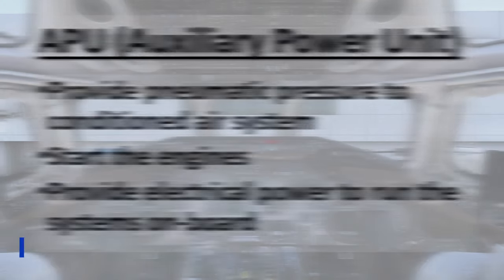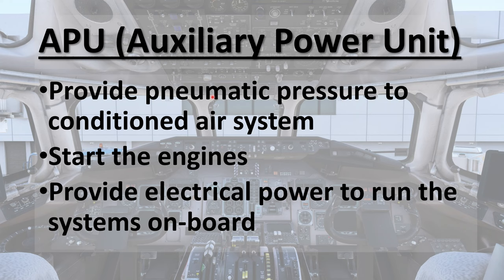So first, let's start with the functions of the APU or Auxiliary Power Unit. The first one is to provide pneumatic pressure to the air conditioning system — this is when you don't have the external air conditioning unit connected or you don't have the engines running to do that function. The second one is to obviously start the engines, and this can be done both on the ground.